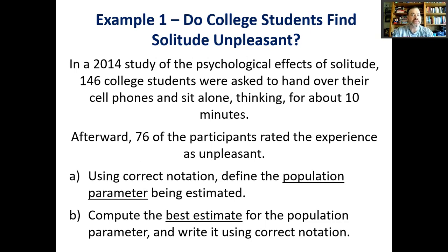Starting in this section, notation becomes incredibly important. So for Part A, what is the population parameter? A parameter is a number that describes some aspect of the population. Here we don't know what the population is, so we have to figure it out — we have to analyze the problem before we even start solving it. There's nothing to solve at this stage; we're still just breaking it down.